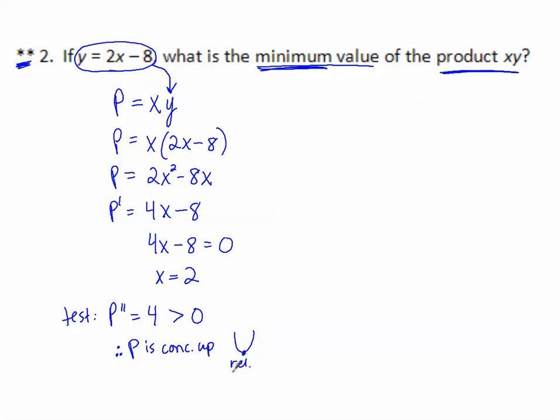So we know it's a relative minimum, which is what we were looking for. Now what is the minimum value of the product? This time it's not the x and y we want, it's the minimum value of the product. I want to use the equation that only has x in it. So the product is 2 times 2 minus 8. So it looks like 4 minus 8, negative 4. So negative 8. There's my minimum value of the product.